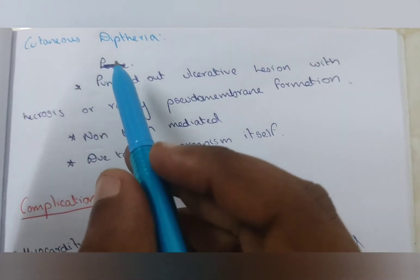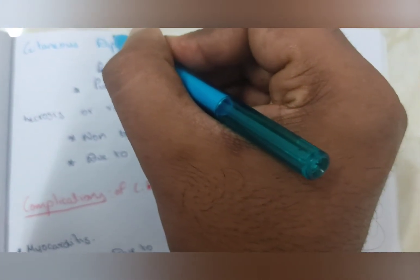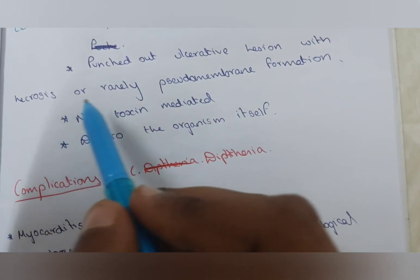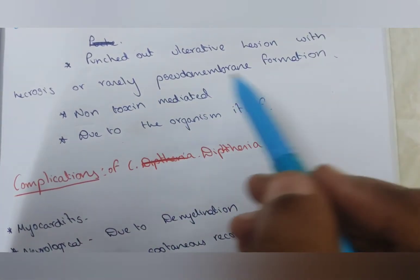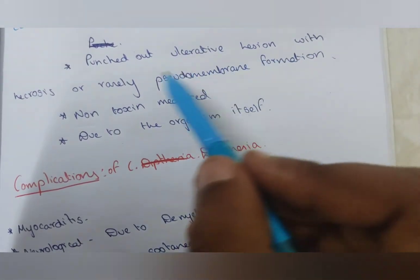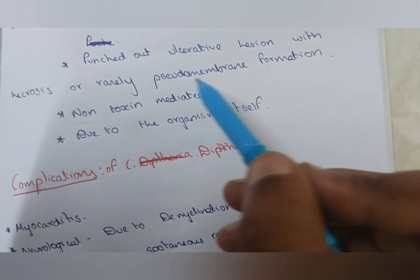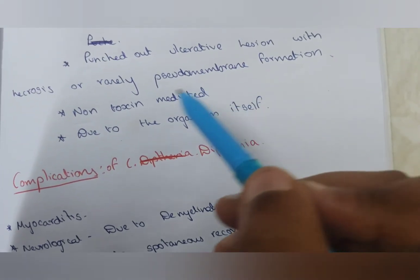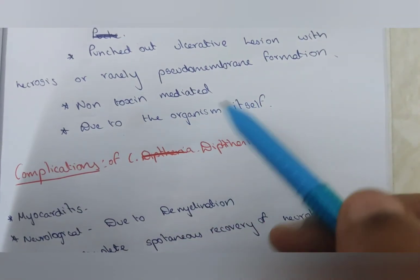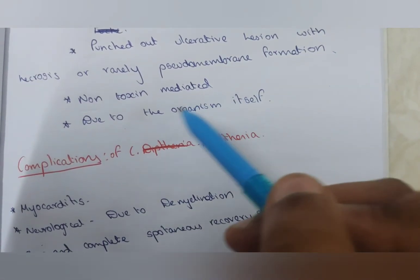Cutaneous diphtheria. Punched out ulcerative lesion where necrosis rarely has pseudomembrane formation. There are punched out ulcerative lesions. Lesions with necrosis are seen. Rarely pseudomembrane formation. Here rarely pseudomembrane formation takes place. This is not affected by toxin. It is due to the organism itself. It is not toxic mediated. It is due to the organism itself.